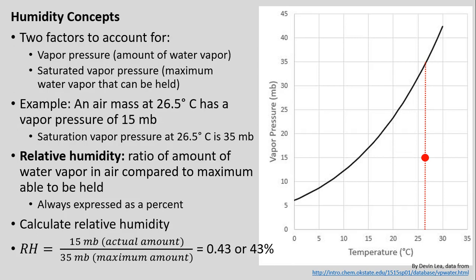There are two factors to account for: the vapor pressure — the amount of water vapor in the air — and the saturated vapor pressure — the maximum water vapor that can be held at a given temperature. As an example, an air mass at 26.5°C has a vapor pressure of 15 millibars, shown by the red dashed line and dot on the graph. Tracing up from 26.5°C we place a dot at 15 millibars, and tracing up to the saturation line, we see the saturation vapor pressure at this temperature is about 35 millibars.